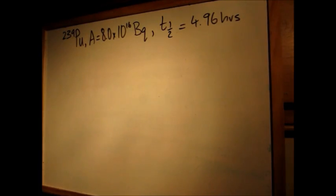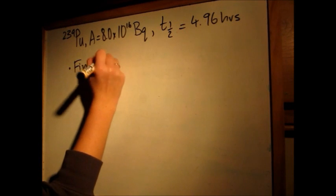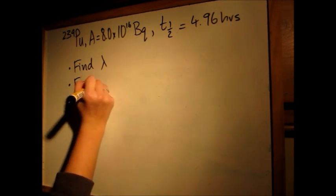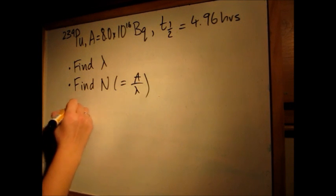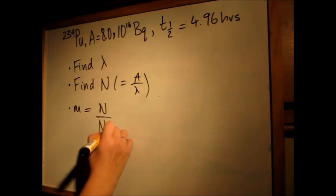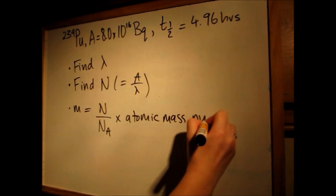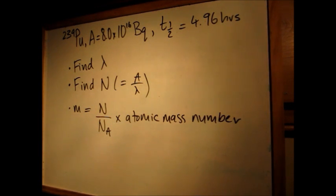To recap, we need to find the decay constant, then find N, the number of atoms. Then use mass equals N over NA times the atomic mass number to give you a number in grams. Well done.